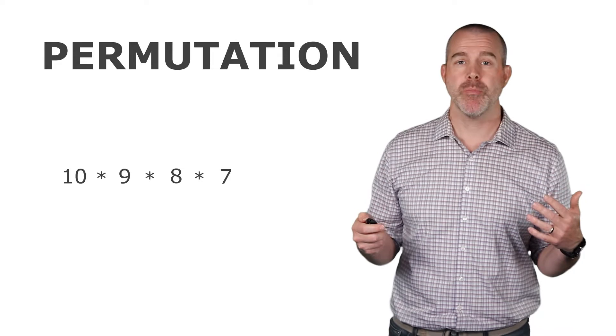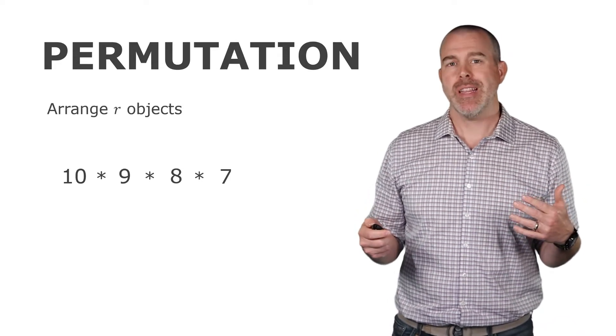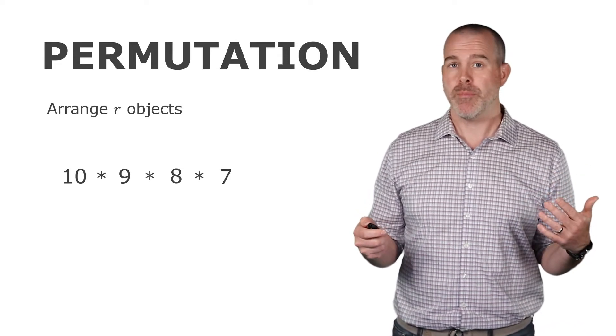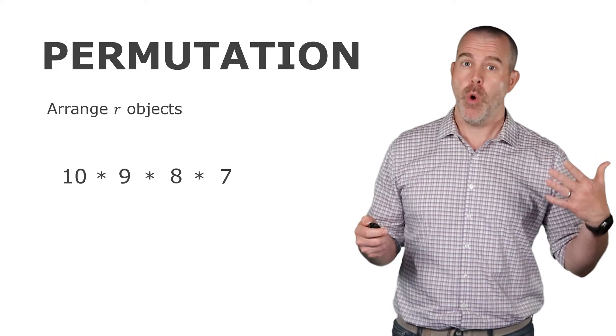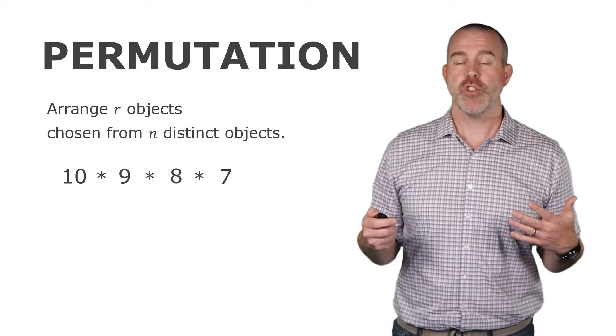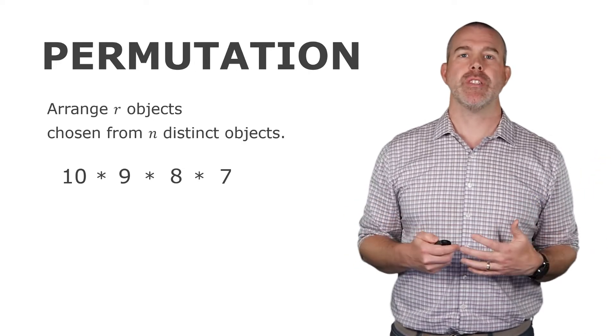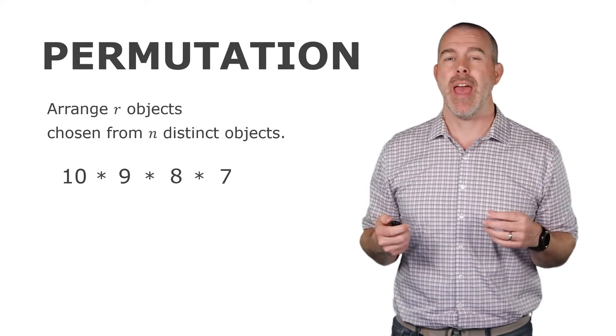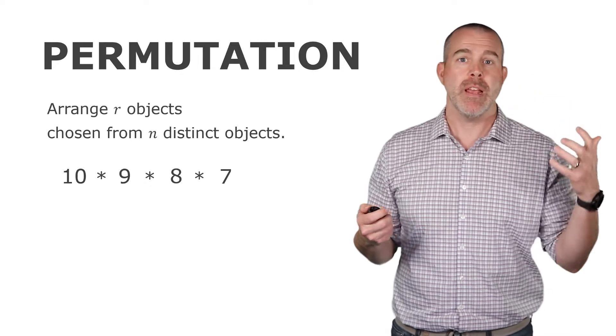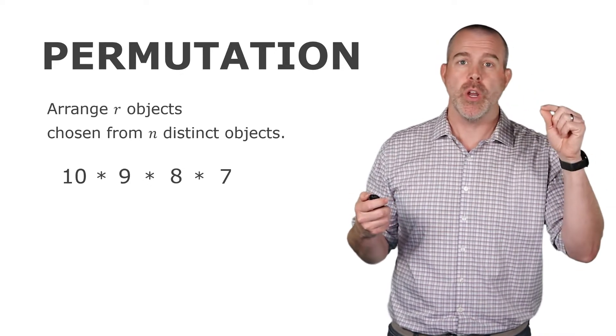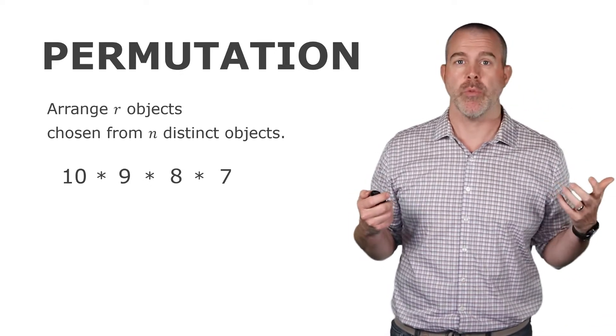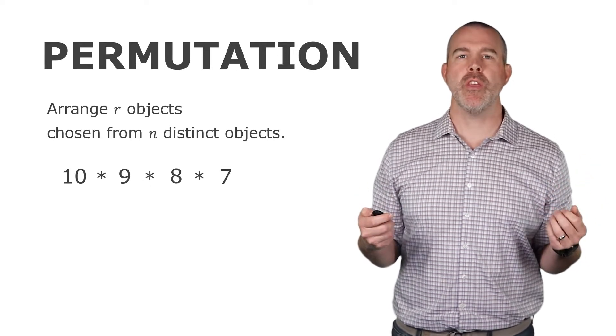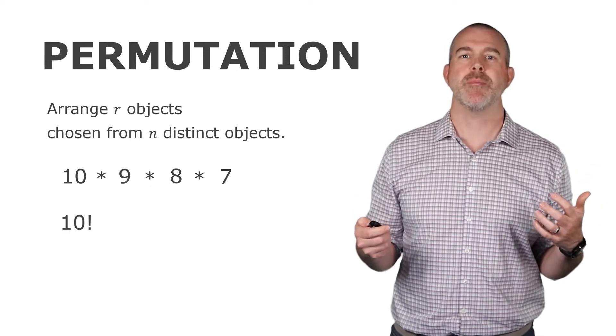This is called a permutation. Specifically, this is when you arrange r objects, you arrange them, which means order does matter, chosen from n total distinct objects. So we have the 10 distinct digits, 0 through 9, and then we want to arrange four of them. And it's a password. It's a code. So the order does matter. We're arranging them. The formula that we're going to use for this uses 10 with an exclamation point. Now, this doesn't mean like a really big 10. No.